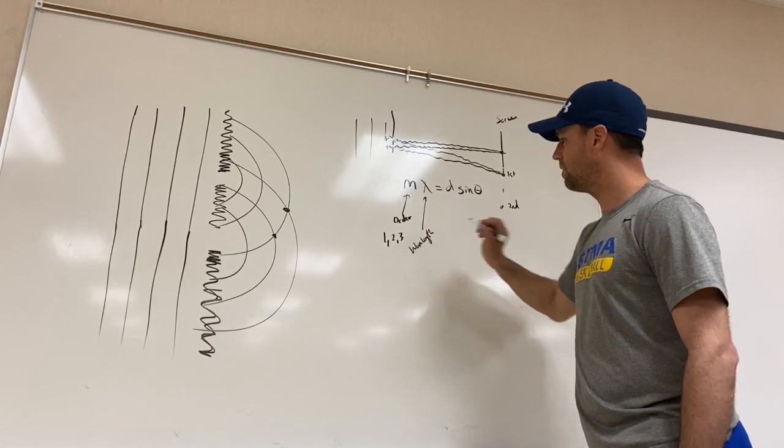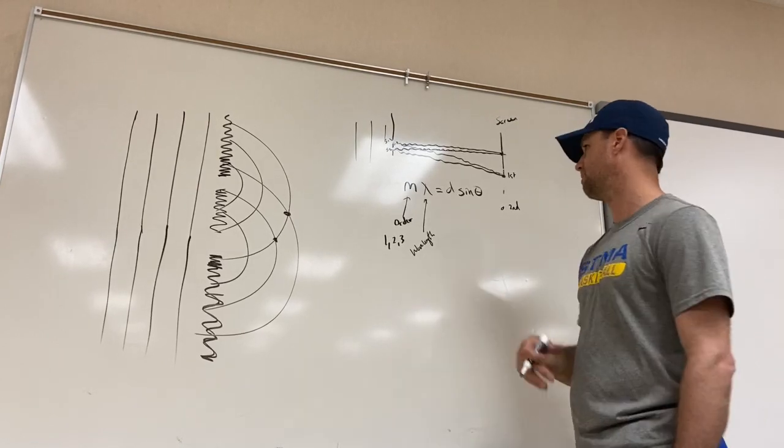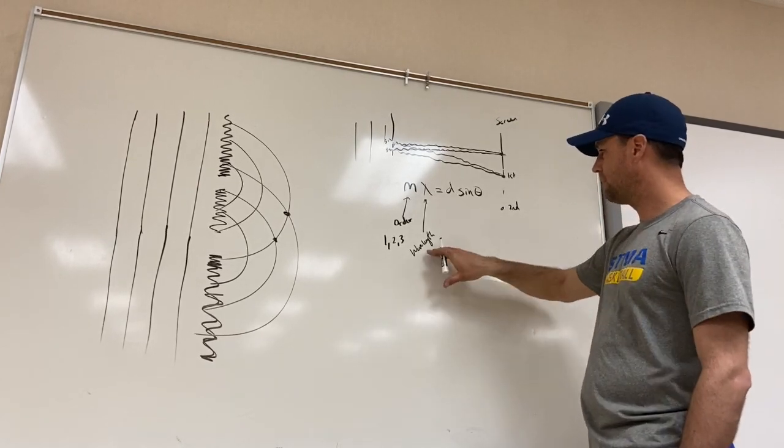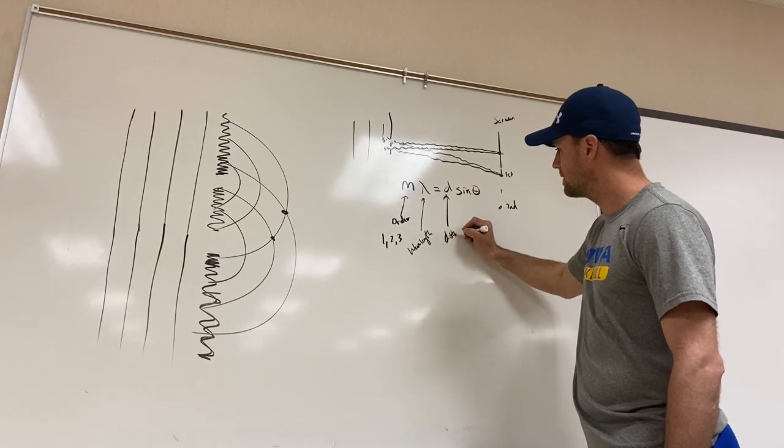So I've already been saying for purple lasers, that's 400 nanometers. For green, it's about 500 nanometers. Right. So that would be the wavelength. D is the distance between slits.